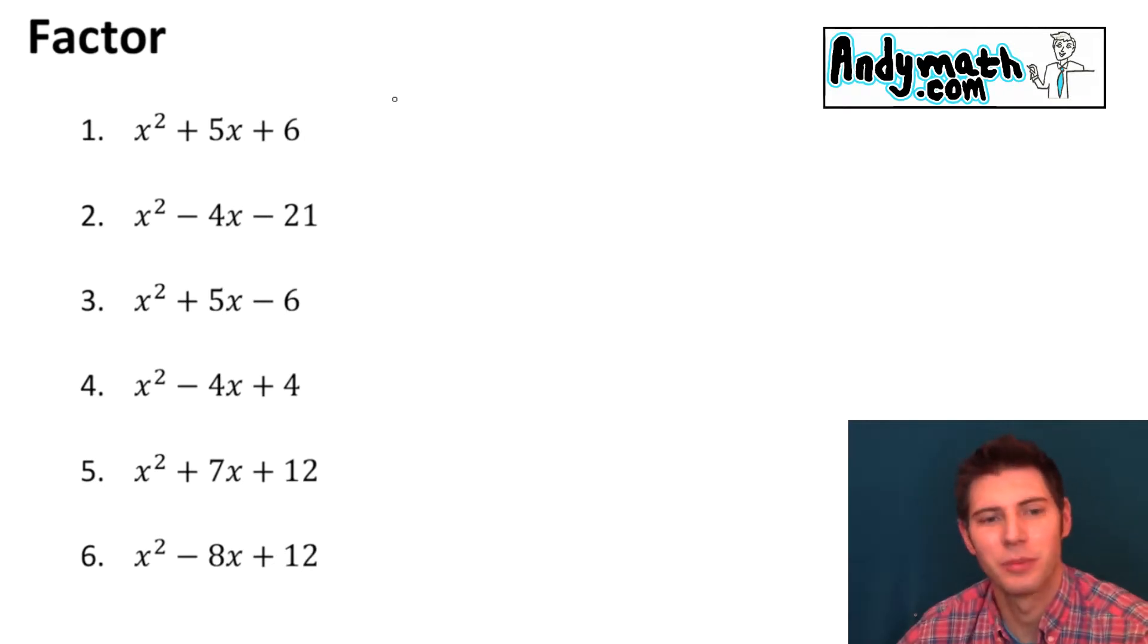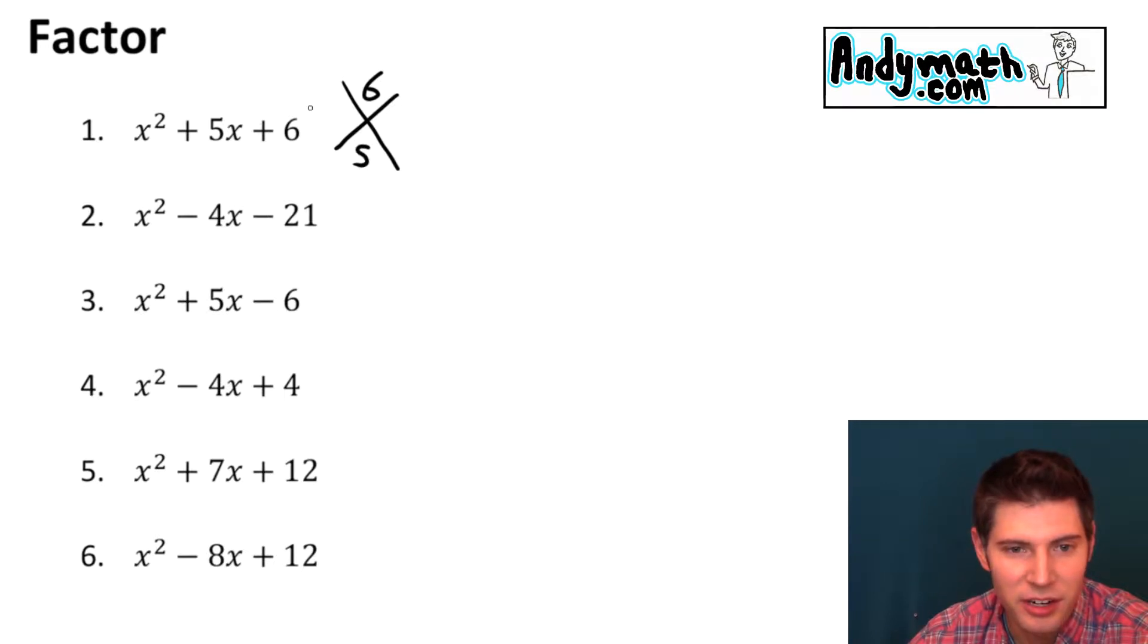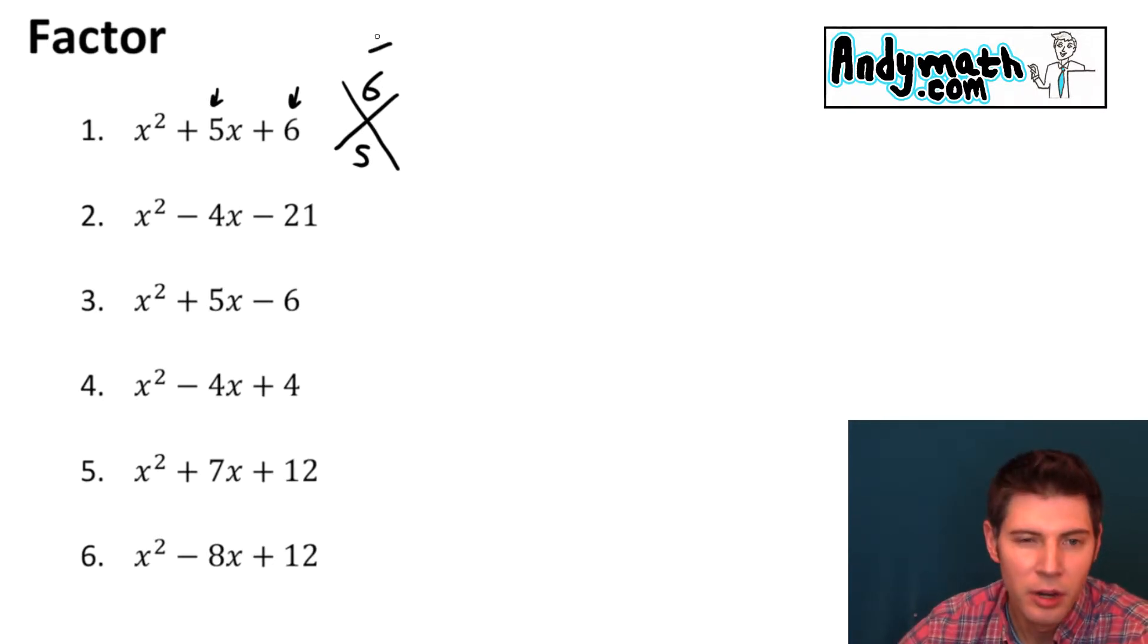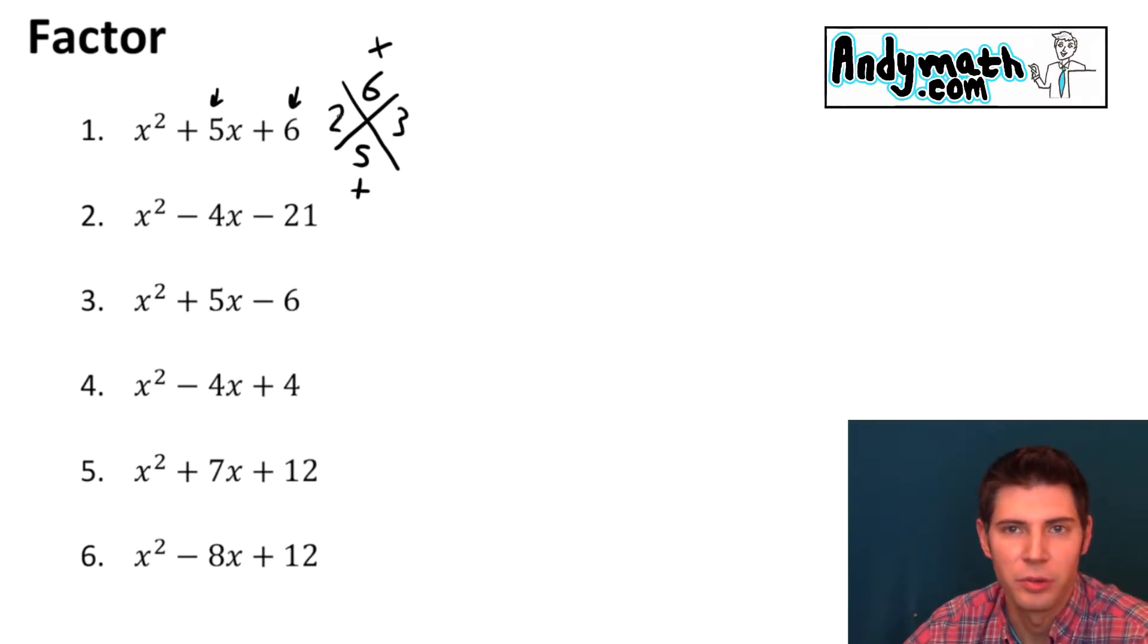x squared plus 5x plus 6. So we make one of these x things, put the 6 here and the 5 here. So the 6 from right here goes on top, the 5 from right here goes on bottom. We're looking for two numbers that multiply to 6 and add to 5. 2 and 3. 2 plus 3 is 5 and 2 times 3 is 6.